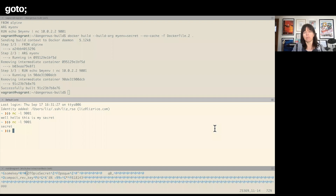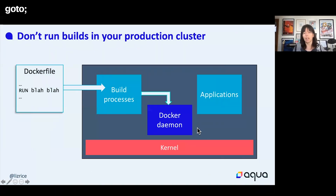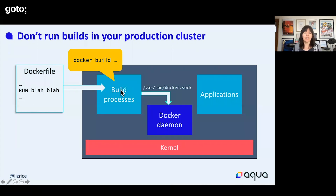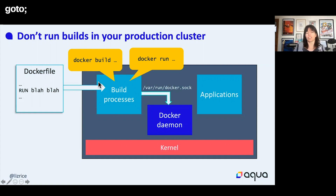So Dockerfiles can be made to do dangerous things. Things get even more interesting if your CI/CD pipeline has access to the Docker socket in order to run builds. If that's the same Docker daemon running your applications, there's really no limitation — it's essentially root access to your applications. If you have access to the Docker socket, you can not just build but also run applications inside that Docker daemon. You can do anything you like over that Docker socket.